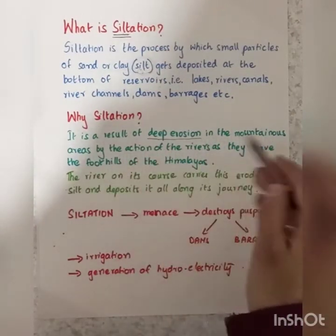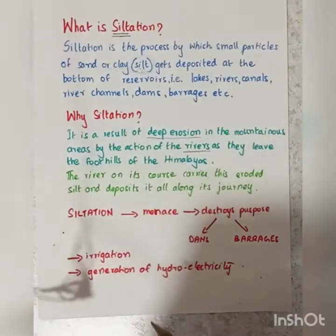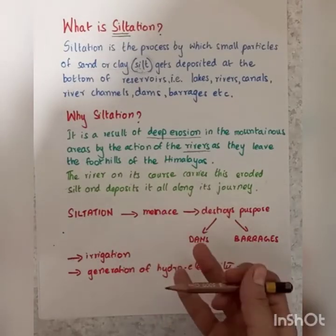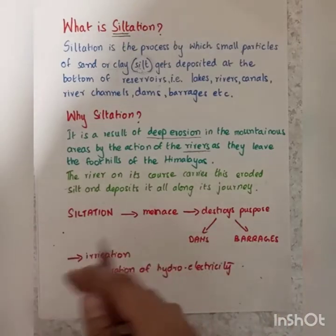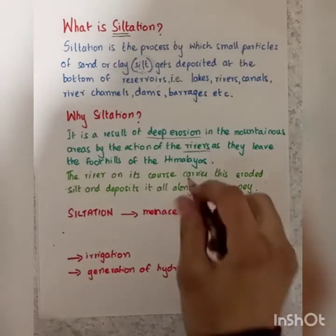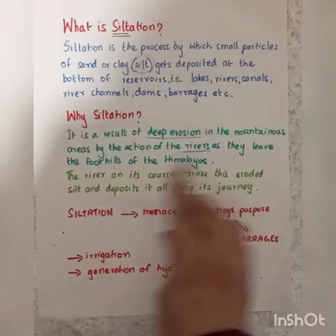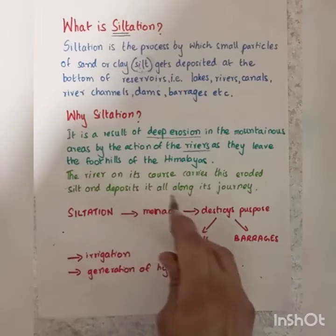Who is eroding these areas? It's the river. The basic activity of the river is erosion and deposition. Erosion takes place at the start, from where the river actually begins, in the mountainous areas — there erosion is at its peak. As the river moves downwards toward the sea, deposition is at its peak. So the river erodes and carries with it all the silt — sand or clay — as it leaves the foothills of the Himalayas, and deposits it all along its journey.